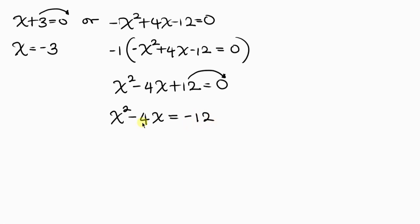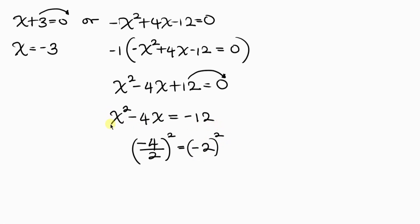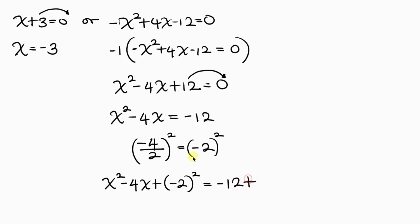Our next step is to take the coefficient of x, which is negative 4, divide by 2 to get negative 2, and square the result. So we add negative 2 squared to both sides of the equation: x squared minus 4x plus negative 2 squared on the left, equal to negative 12 plus negative 2 squared on the right.